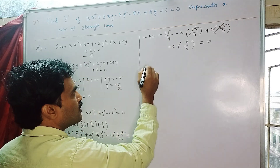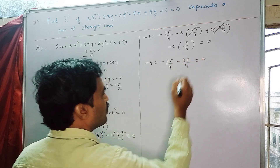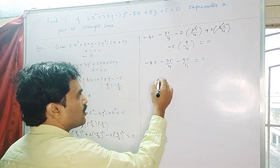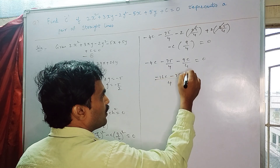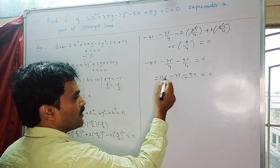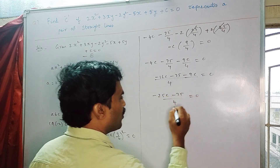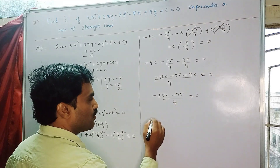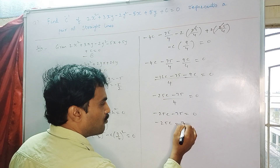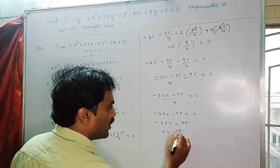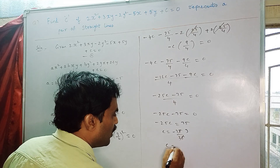The remaining terms are: -4c - 75/4 - 9c/4 = 0. Taking 4 as LCM: -16c - 75 - 9c = 0, which gives -25c - 75 = 0. After cross-multiplying: -25c = 75, so c = -75/25 = -3. Therefore c = -3.